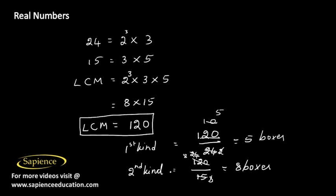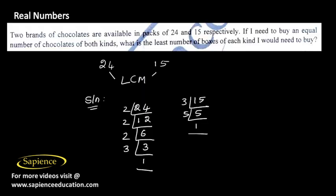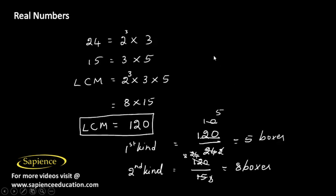So this is the answer for this question. We need 5 boxes of first kind and 8 boxes of second kind so that we can have equal number of chocolates of both kinds. If you have any doubts in this question feel free to discuss in the comment section. Thank you.